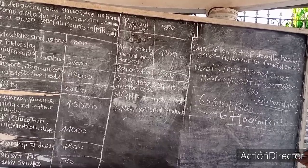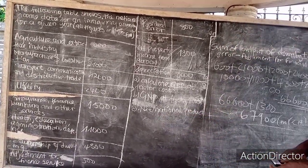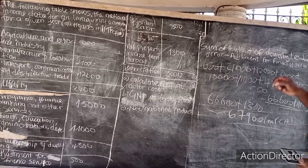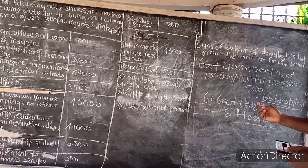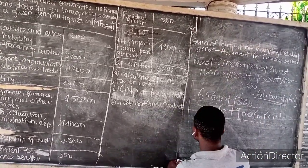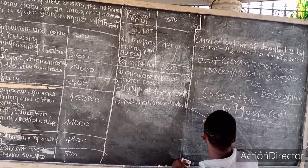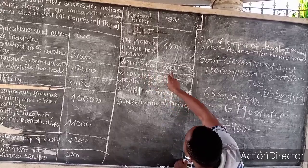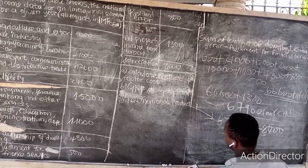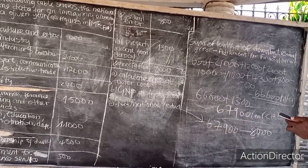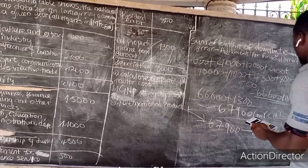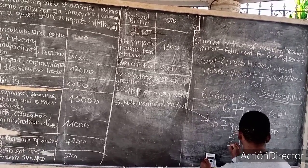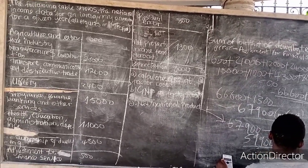The last part of the question is how to calculate the net national product. You take the answer from the gross national product at factor cost and remove depreciation, because depreciation is always subtracted, never added. So we take 67,900 and subtract depreciation of 8,000, giving a total of 59,900 million francs CFA.